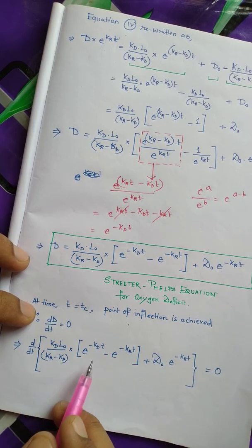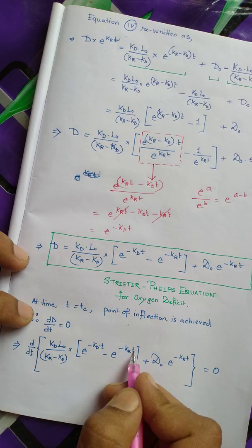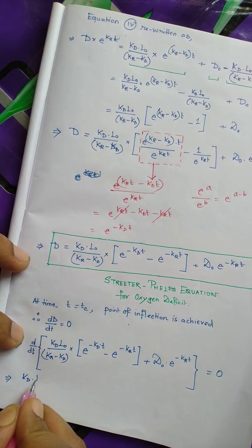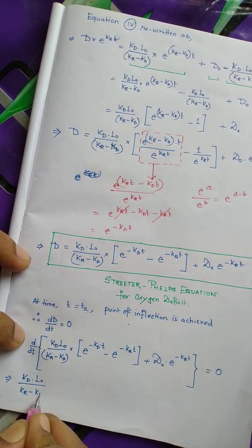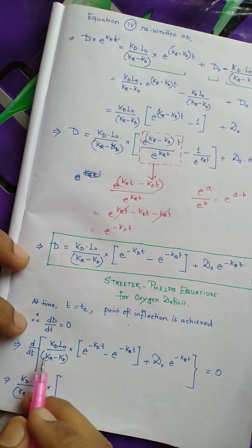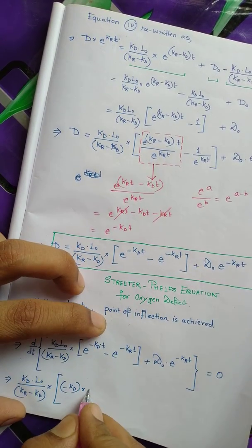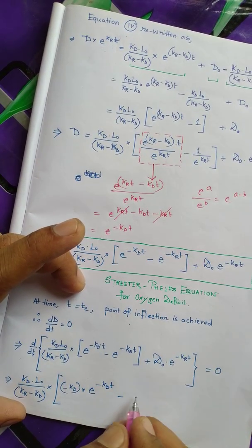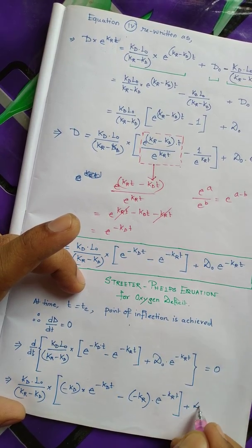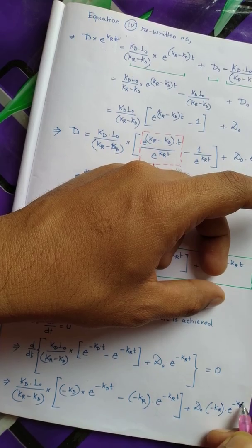Differentiating the equation: the constant term kd·L₀/(kr − kd) remains, while the exponential terms with t get differentiated. d/dt of e^(−kd·t) gives −kd·e^(−kd·t), and d/dt of e^(−kr·t) gives −kr·e^(−kr·t). The D₀ term similarly differentiates to give −kr·D₀·e^(−kr·t). Setting the whole expression equal to zero.